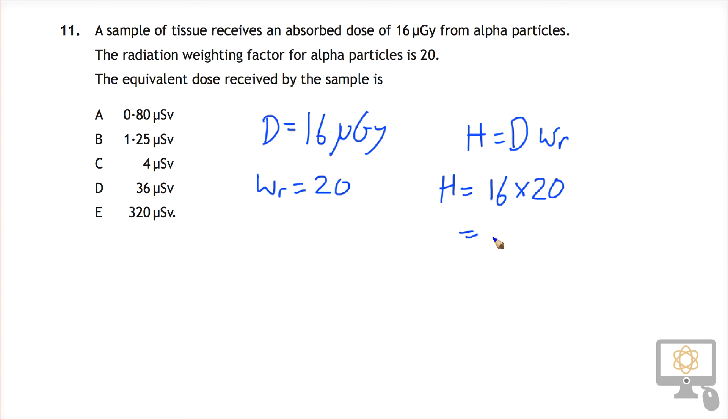And so when we do that calculation, we get 320. And the unit, of course, is micro Sievert. And so that means our answer in this case is E.